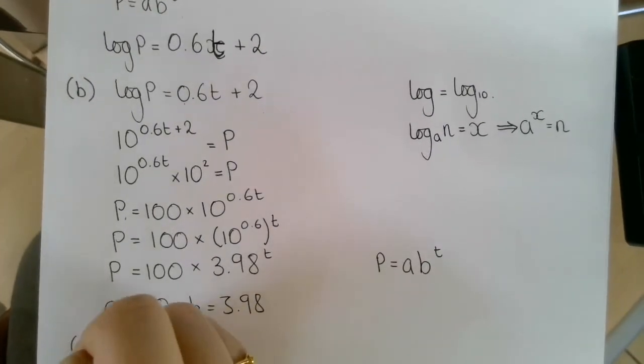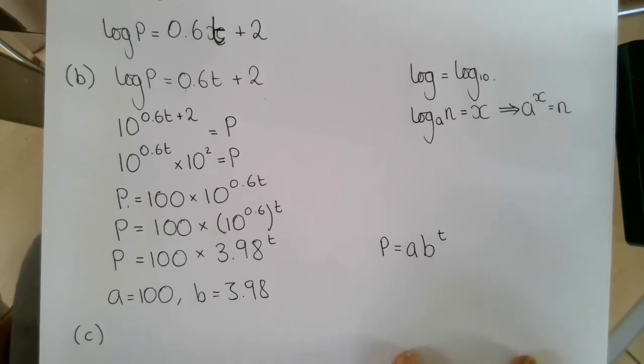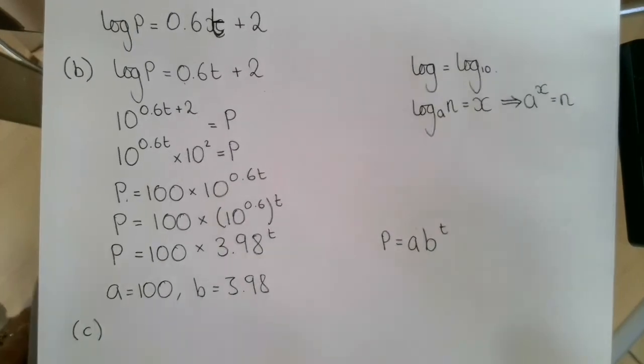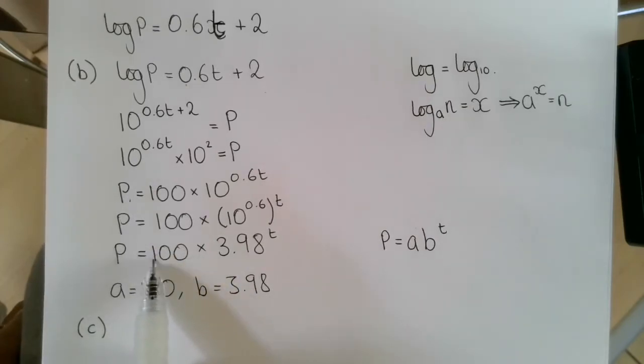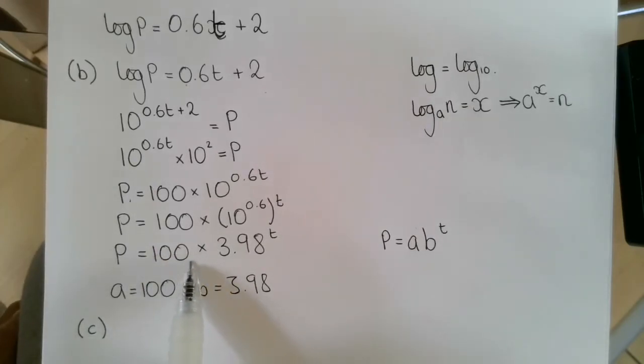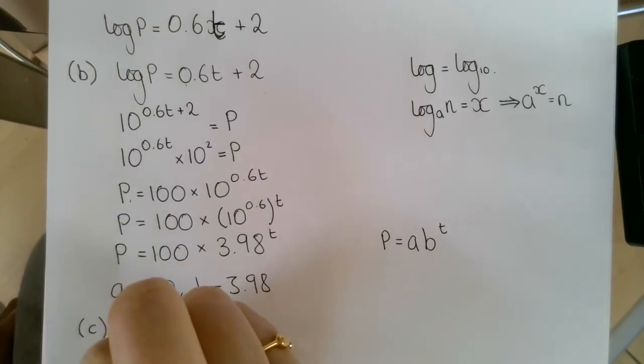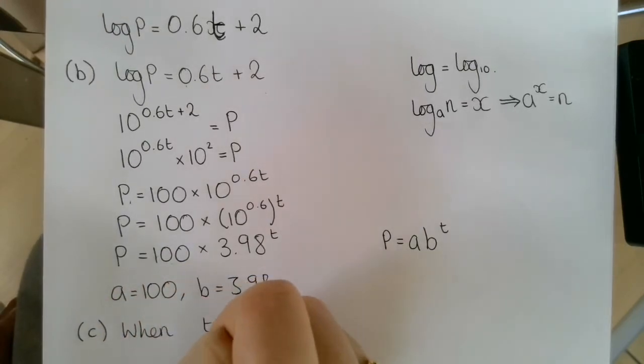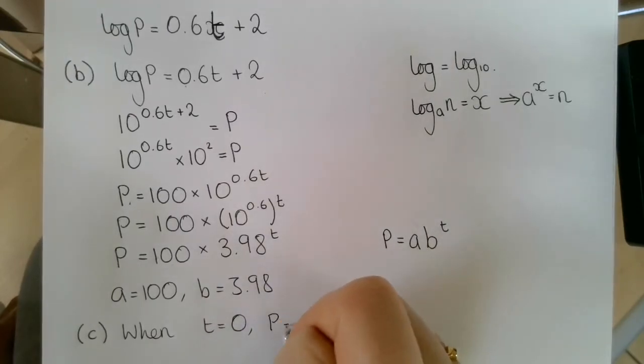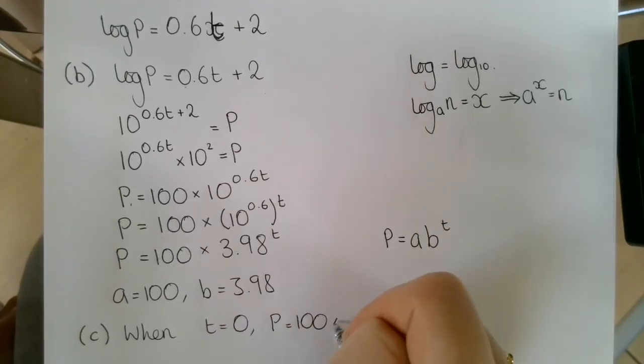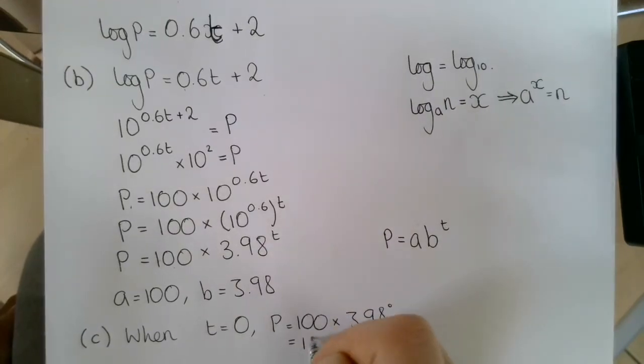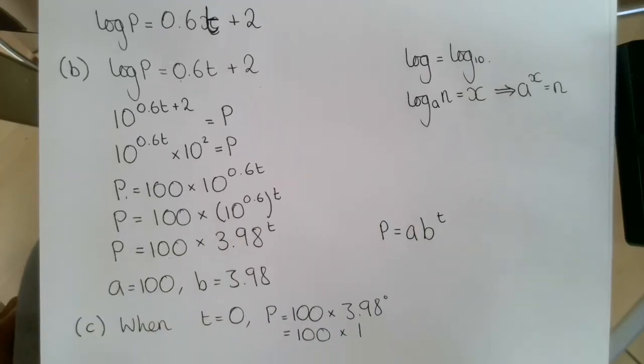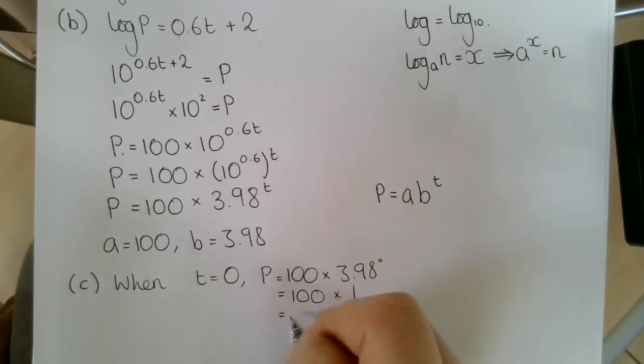Part c says, interpret the meaning of the constant a in this model. So a is that value of 100. So that value of 100, when t equals 0, p is equal to 100 multiplied by 3.98 to the power of 0, which is 100 multiplied by 1, which is 100.